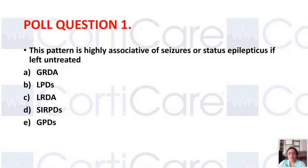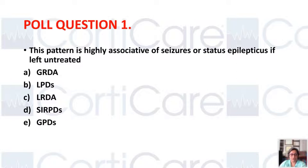Here is the first question. Since we are all monitoring, either in the clinical setting or remotely, which pattern do you think is highly associative of seizures or status epilepticus if it is not treated? There are five options: GRDA, LPDs, lateralized rhythmic delta, stimulus-induced patterns, or GPDs.